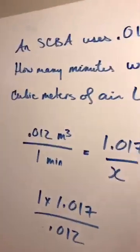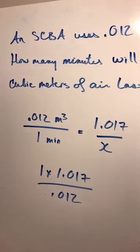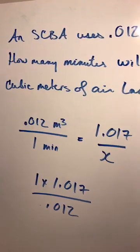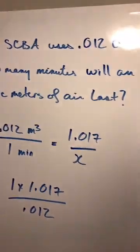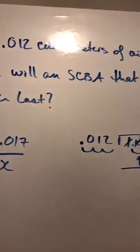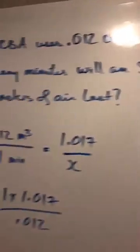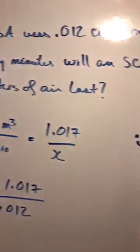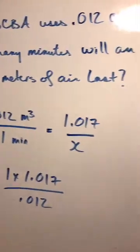I'm going to flip the board here and just show you what I've got going on. So Michelle wrote after our Ottawa class, she wrote about the SCBA question and the question reads: an SCBA uses 0.012 cubic meters of air every minute. How many minutes will an SCBA that contains 1.017 cubic meters of air last?